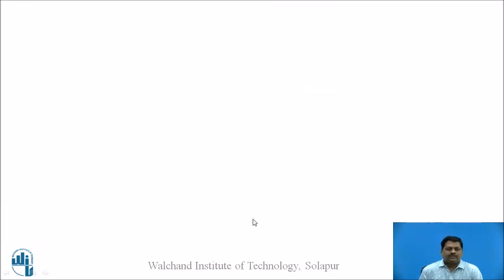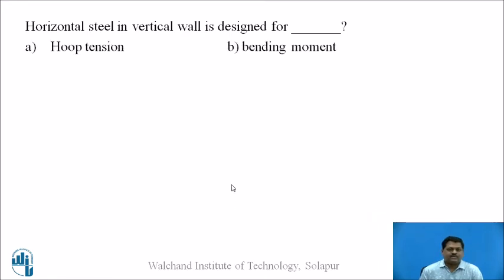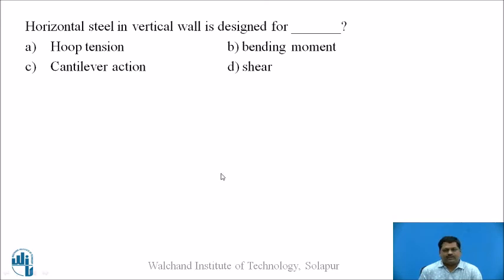Now a question for all of you: horizontal steel in the vertical wall is designed for what action? Options A, B, C, D are given. Pause the video, give your answer, and then proceed. The answer is A — hoop tension.